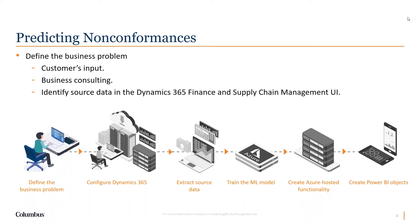The best practice for tracking quality events in Dynamics 365 is to create what's called a non-conformance record whenever we have a quality problem, and link that non-conformance to the associated transaction record. In our case, whenever there's a quality problem on a production order, there should be an associated non-conformance entered into D365 and linked back to that production record. By observing the circumstances surrounding production orders from the past that were linked to non-conformances, we can use machine learning to predict which orders pose a higher risk of having them in the future.